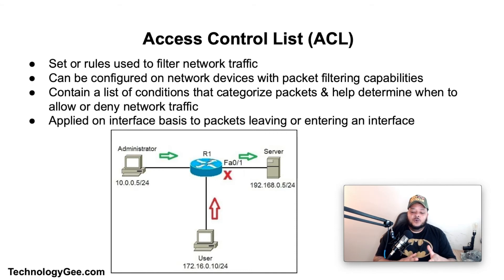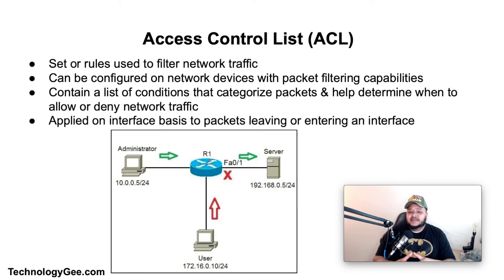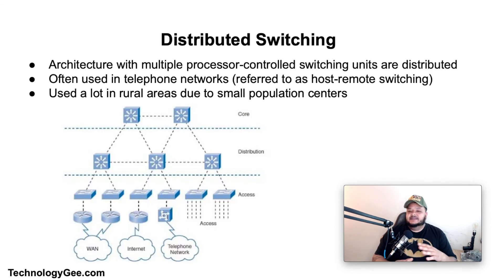An Access Control List (ACL) is a set of rules used to filter network traffic. ACLs can be configured on network devices with packet filtering capabilities such as routers and firewalls. They contain a list of conditions that categorize packets and help determine when to allow or deny network traffic, and they are applied on an interface basis to packets leaving or entering an interface.